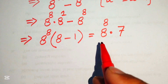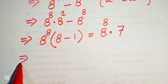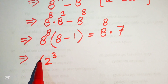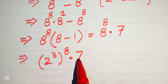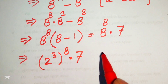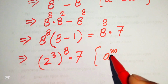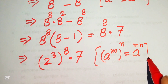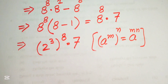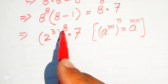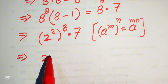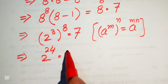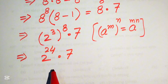Now we focus on the base of this term. The base is 8, and we write it in prime factor form: 8 equals 2 cubed. So we have 2 cubed, with the whole exponent of 8, multiplied by 7. We use the exponent law: a to the power of m to the power of n equals a to the power of m times n. Multiplying the exponents: 3 times 8 equals 24. So this becomes 2 to the power of 24, multiplied by 7.